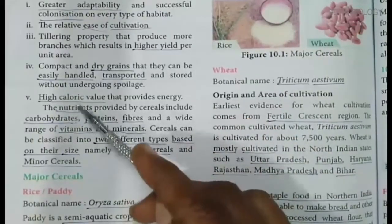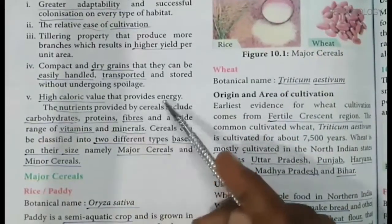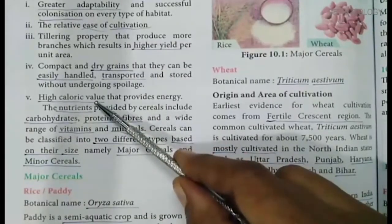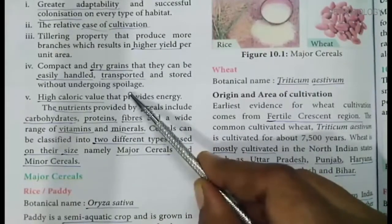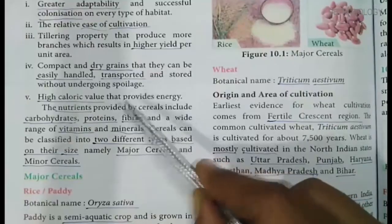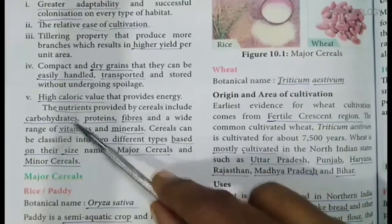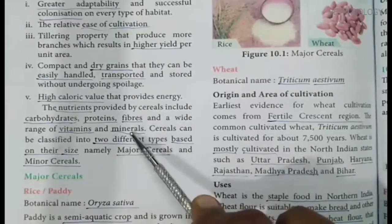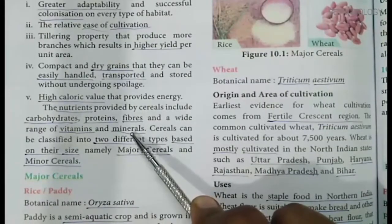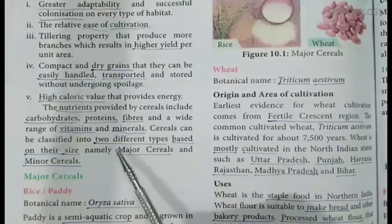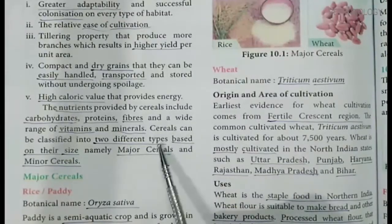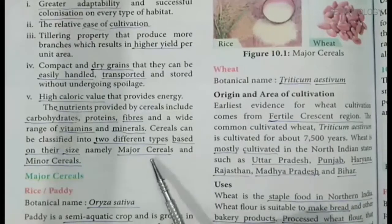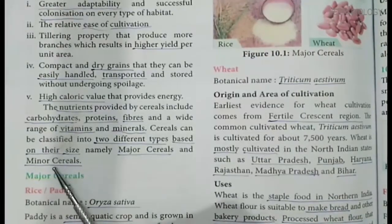Cereals have high caloric value that provides energy. They can provide carbohydrates, proteins, fibres, vitamins and minerals. They can be classified into two different types based on their size, namely major cereals and minor cereals. Rice and wheat are major cereals. Millets such as finger millet and sorghum are the minor cereals. Minor millets such as foxtail millet and kodo millet are very small cereals.